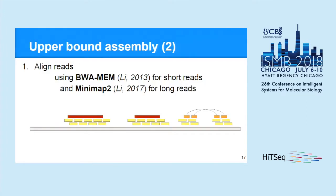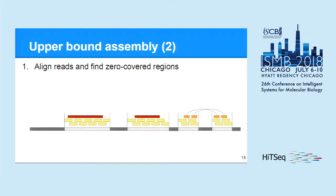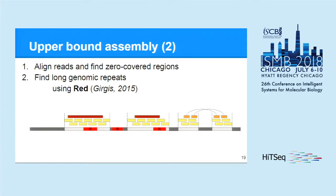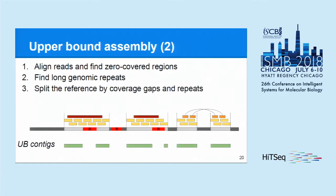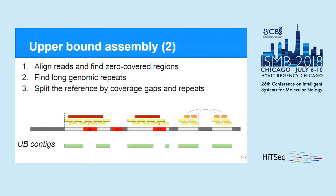The input data for our algorithm are various types of reads and a reference genome for a particular species. First, we align reads to the reference using BWA or minimap2, depending on the read type. When that's done, we can easily find zero-covered regions, which will not be included in the upper bound assembly. We also find long genomic repeats using the RED de novo repeat finder and mark them in the reference. We can then split the reference by zero-covered regions and by repeats, ending up with what we call upper bound contigs.